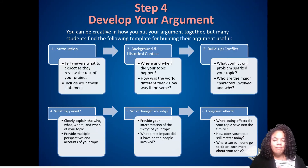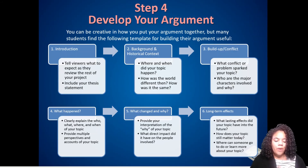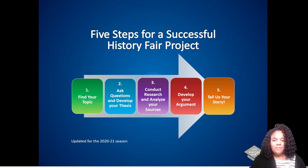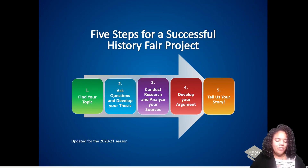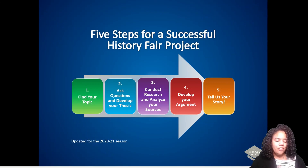So remember, this is a guide — a suggestion, not a rule. You can use a different format or adjust this one if you need to, but this is one great way to organize your evidence to develop your argument for your History Fair project. That's it for step four. Be sure to check out our student page at chicagohistoryfair.org for more on developing your argument and every step of the History Fair process. You can learn all about the different project categories and how History Fair projects are judged in our next video: step five, tell us your story. Thank you for watching and have fun making history.